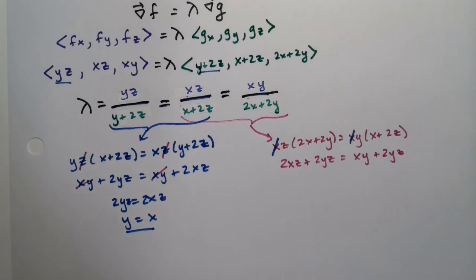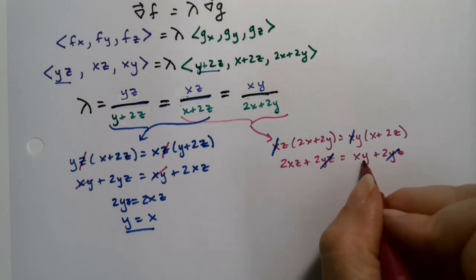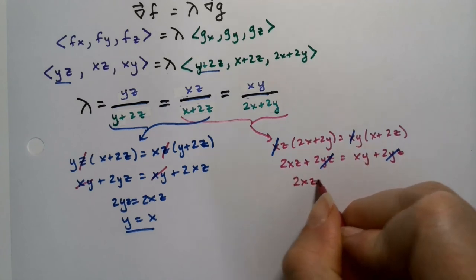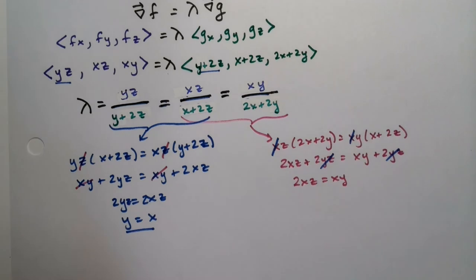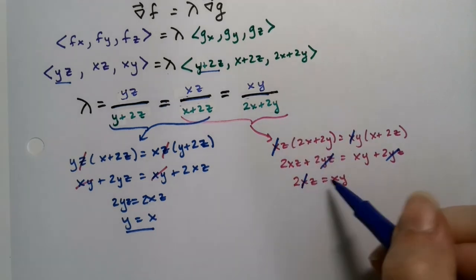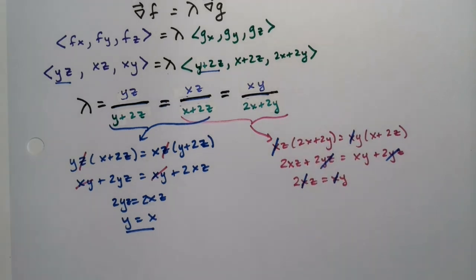And that leaves you 2xz plus 2yz equals xy plus 2yz. Well, the 2yz's are going to cancel, because you just subtract it from both sides. And you're left with 2xz is equal to xy. So get rid of the x's on both sides, divide both sides by x. And you're left with y is equal to 2z.